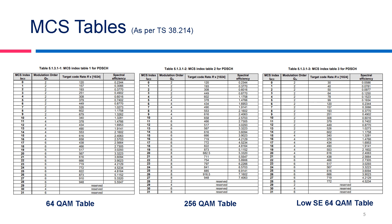Regarding MCS tables: in 4G we had only a single table for MCS for the PDSCH channel, but in 5G we have three tables for different applications. This MCS table is taken from physical layer spec 38.214. The very first table is the 64 QAM table, which is similar to the LTE table. The second table is the 256 QAM table, and as per this table, MCS can go up to 256 QAM with a certain code rate.